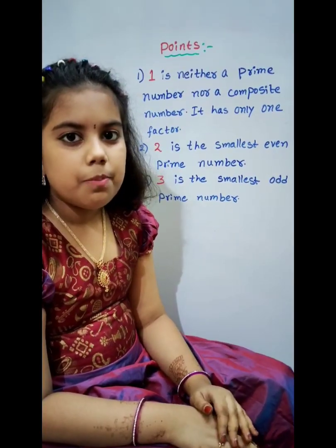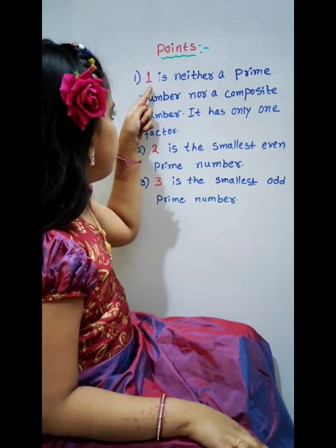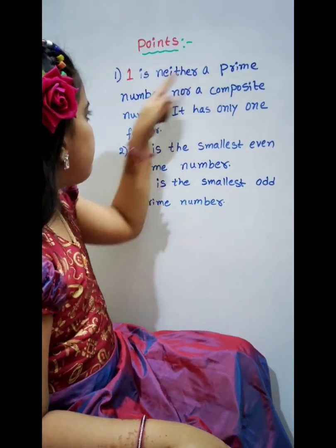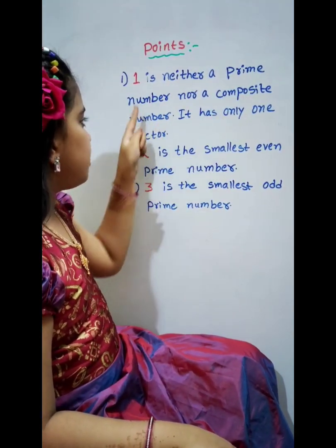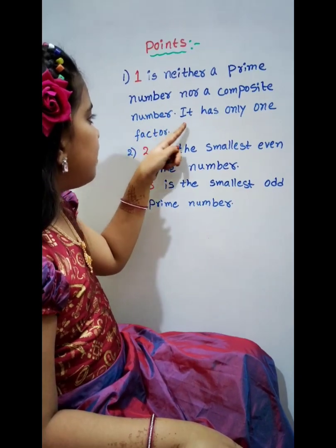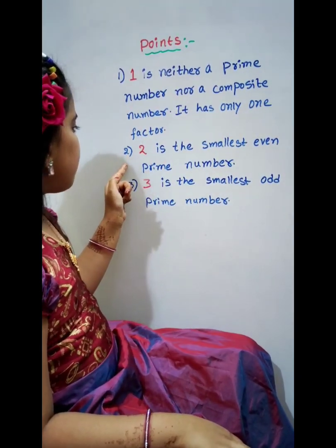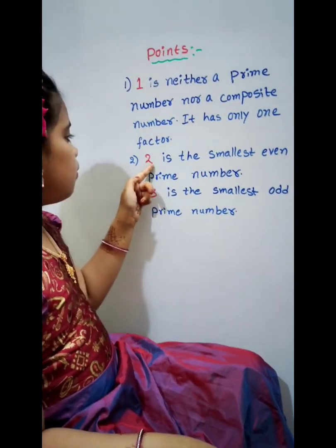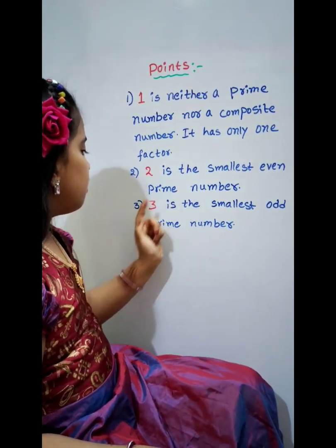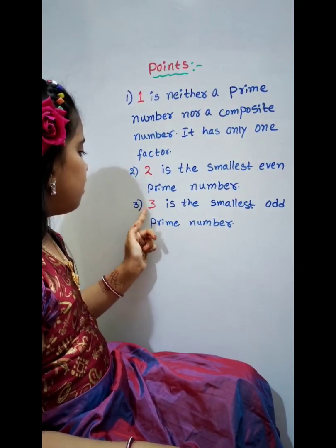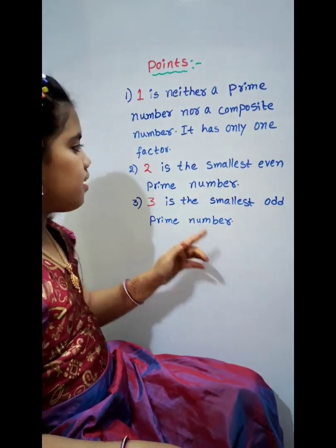Some Important Points. First: 1 is neither a Prime Number nor a Composite Number. It has only 1 factor. Second: 2 is the smallest even Prime Number. Third: 3 is the smallest odd Prime Number.